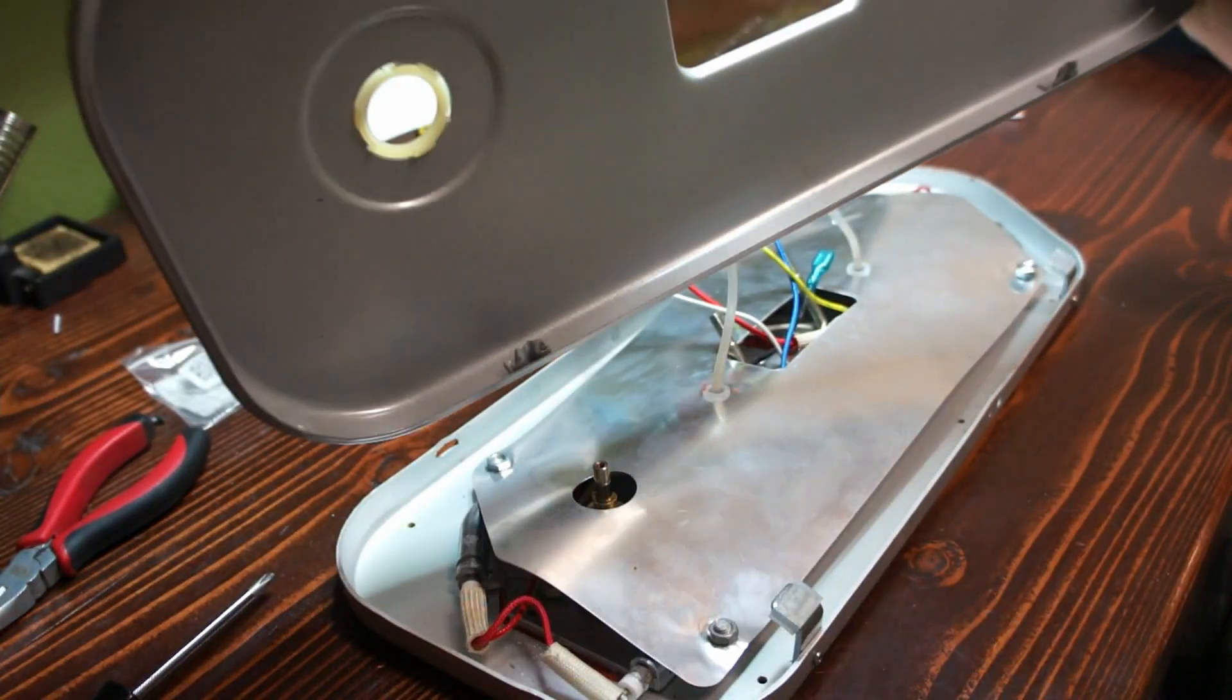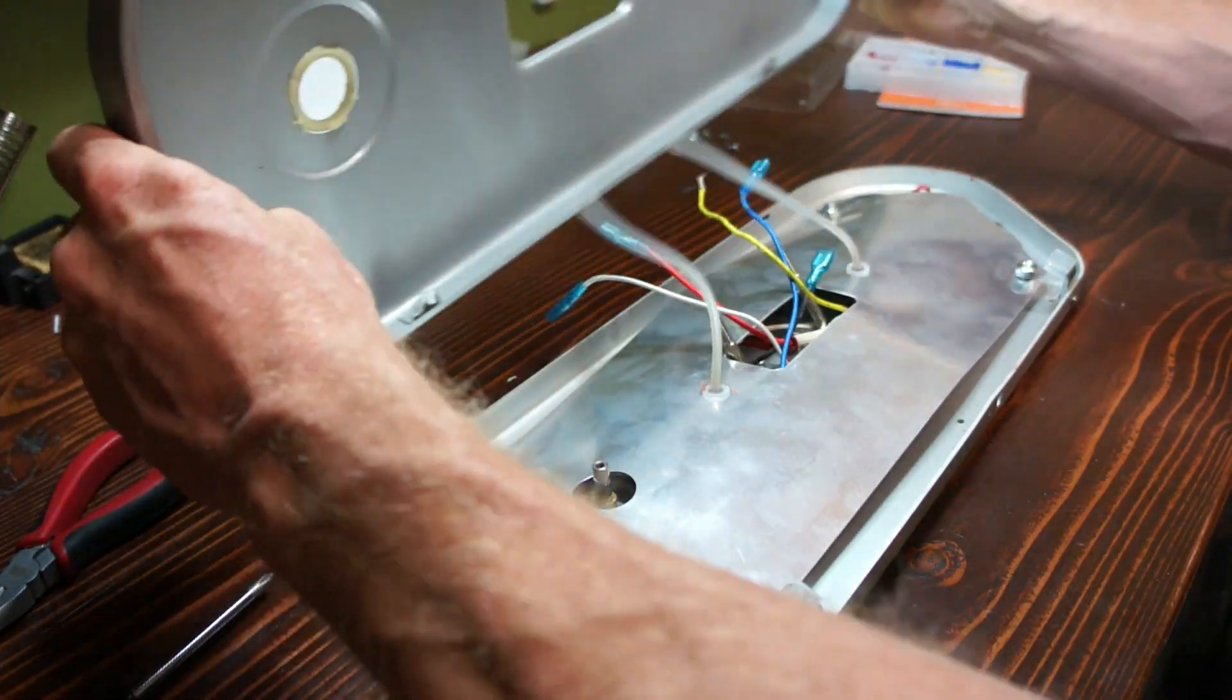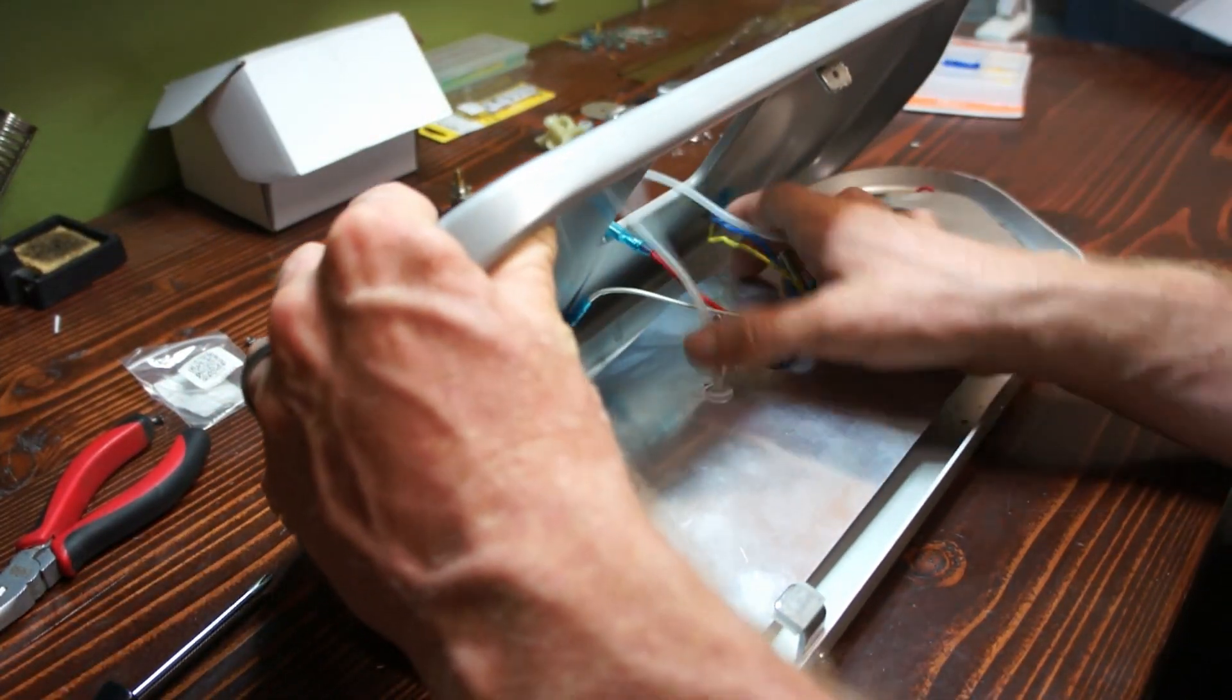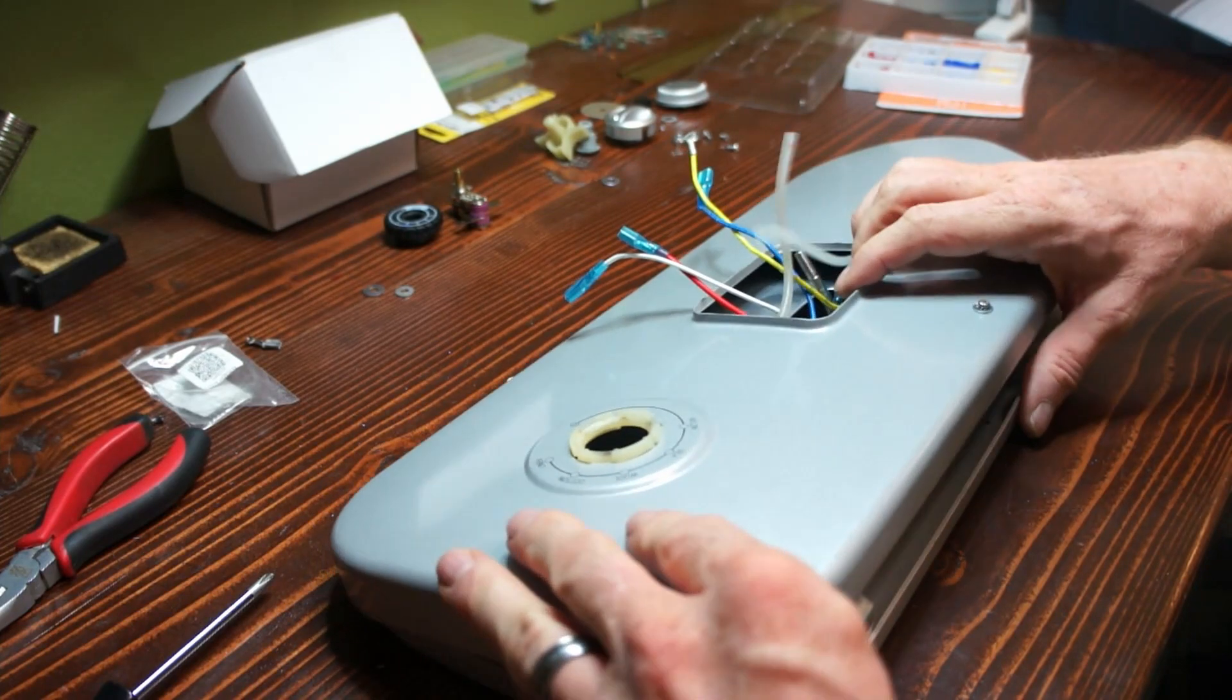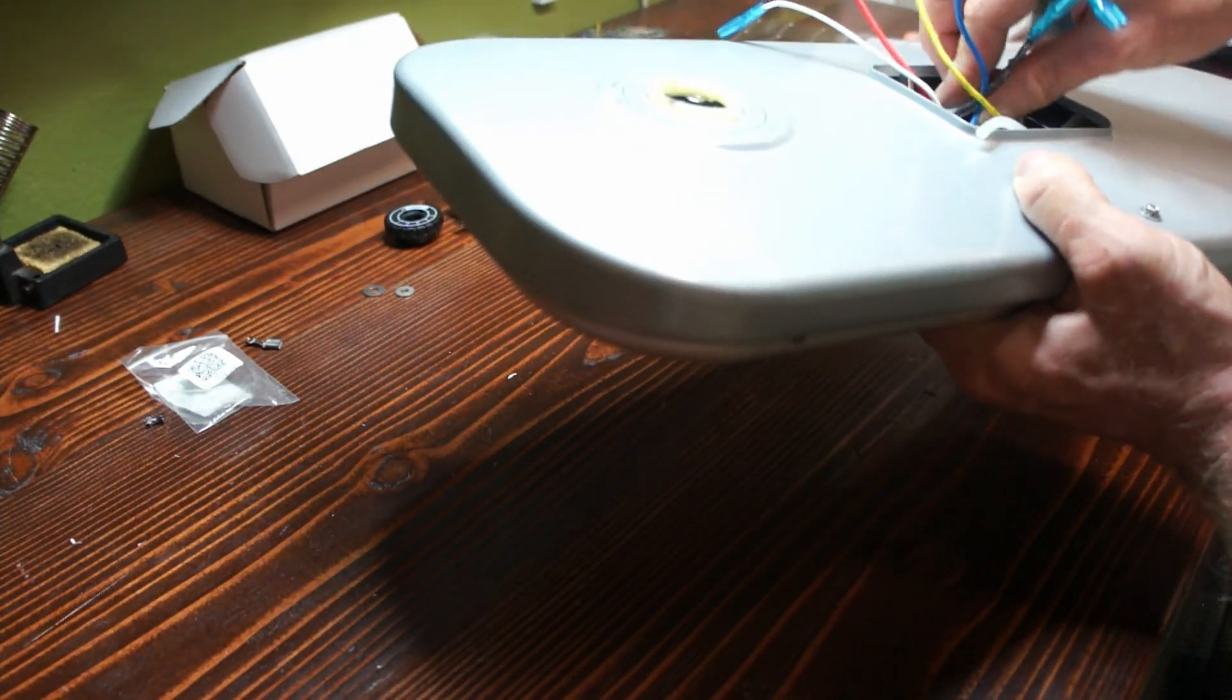All right, now we can put the clamshell top back on. There's these two inserts that go into these slots. You can just insert it and it folds down. You just put that single screw back in and the clamshell assembly will be back together.